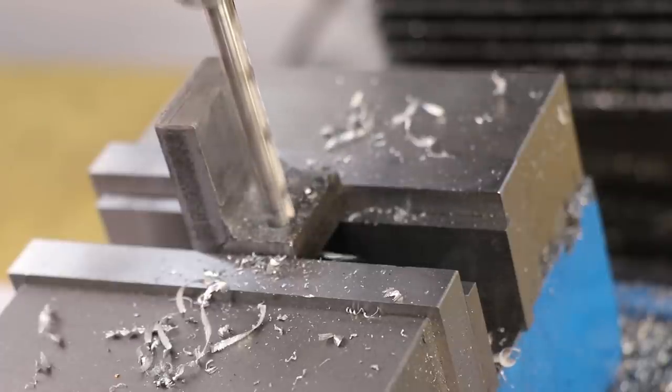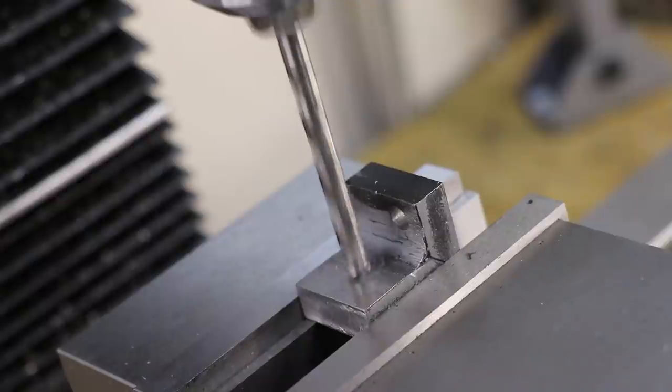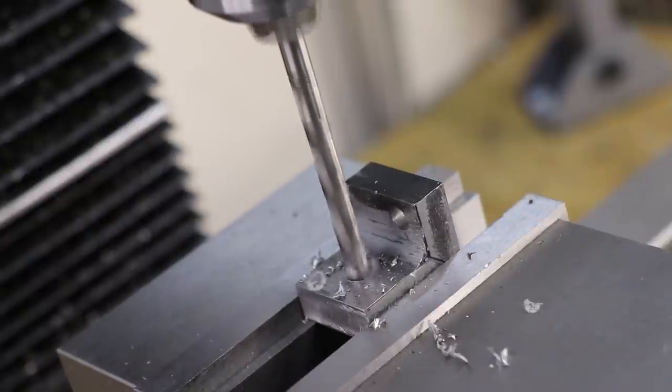I'll drill in an offset hole for the mounting hole that I'll use to bolt it to the mill. Then I'll drill in a hole for the depth rod.